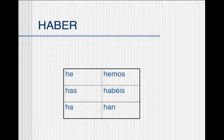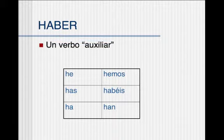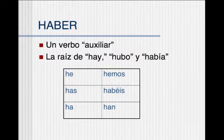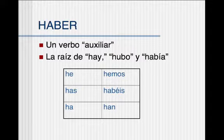Remember not to pronounce the H. Haber is an auxiliary verb — basically a helping verb — and it's used a lot in Spanish. It basically translates as 'to have,' but sometimes not exactly. This is also the root of the word hay (there is/there are), and hubo y había (there was/there were) in the preterite and the imperfect. So for now, this is the present tense of haber, and we have to use it with this tense.